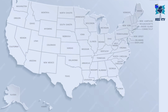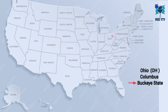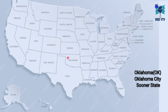Next state is Ohio, its abbreviation is OH, its capital is Columbus, its time zone is EST, and its nickname is Buckeye State. Next state is Oklahoma, OK is its abbreviation, its capital is Oklahoma City, its time zone is CST, and its nickname is Sooner State.